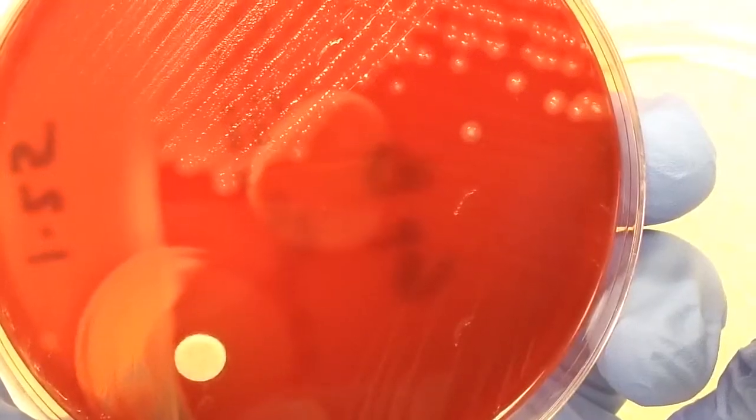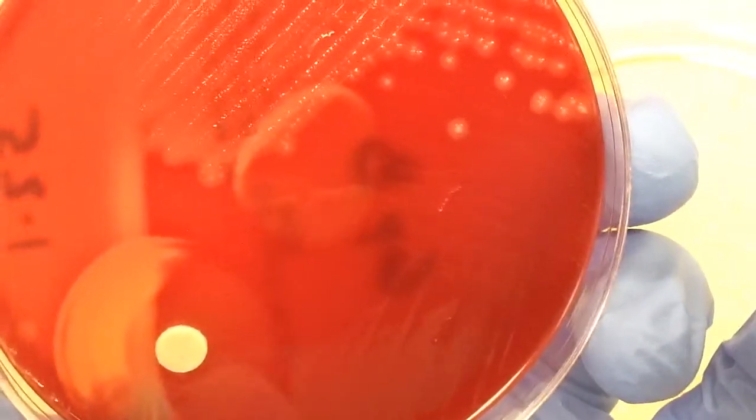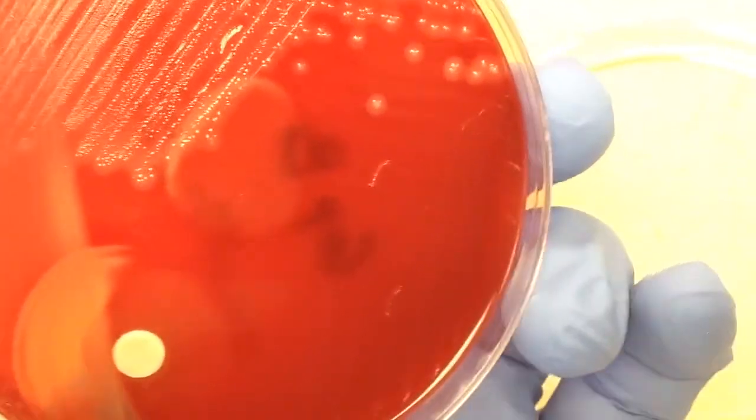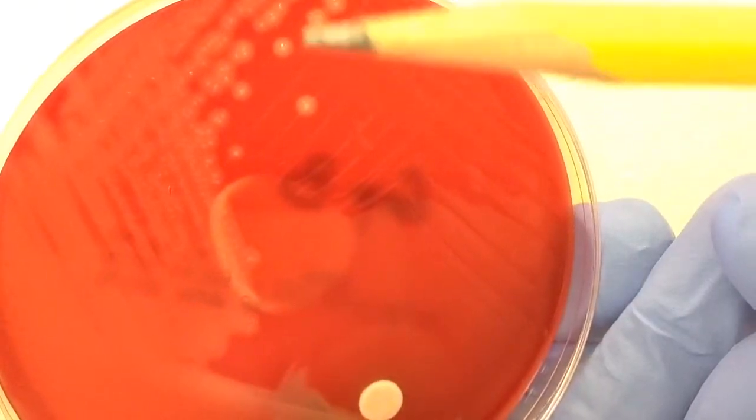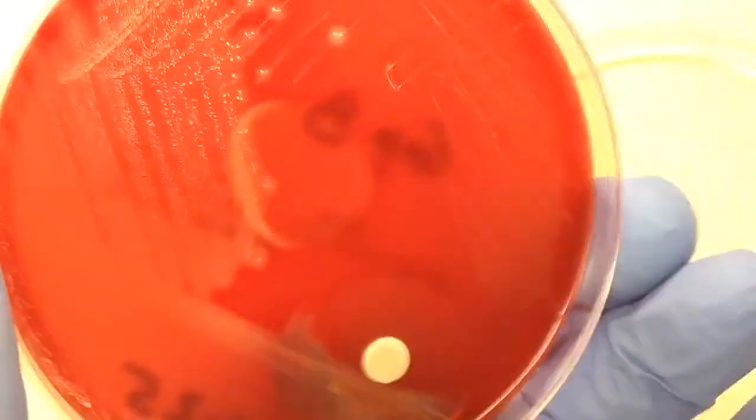Now group B, or Streptococcus agalactiae, is beta hemolytic. It's not as beta hemolytic as for example, Strept pyogenes group A, but you can definitely see here this halo of clear hemolysis around the colonies.